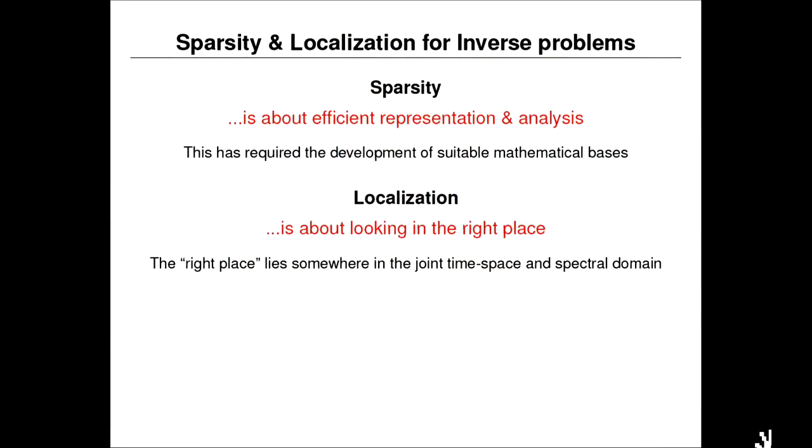Localization is about looking in the right place. Ultimately we're all geologists — we look at the Earth in a particular space domain or time domain when examining time series or climate records. But we're also in a particular spectral domain, because the energy of geophysical signals lives in a particular frequency domain. Measurement devices are always band-limited, and computation always stops at a certain bandwidth. Localization means finding the area of time, space, and spectral space where our signal-to-noise is high, our measurements reliable, and where we can make useful predictions from the data.